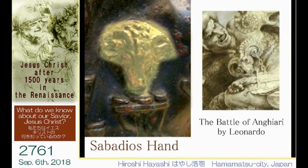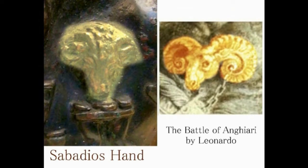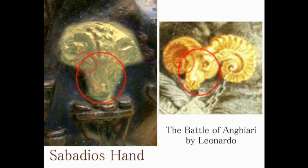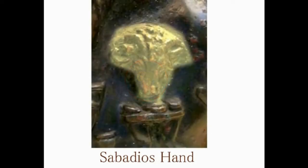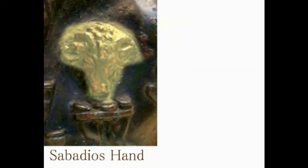These binary elements include, for example, male and female, good and evil, on and off, etc. I, Hiroshi Hayashi, would like to show you in this video the image of Baphomet painted by Giorgio Vasari, a painter in the Renaissance, painted in 1565 — almost 300 years earlier than the age of Eliphas Levi. Baphomet is Jesus Christ himself in its image.